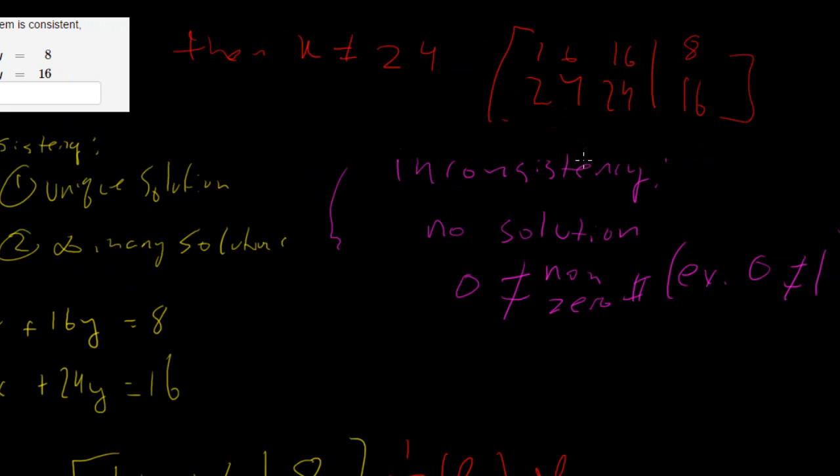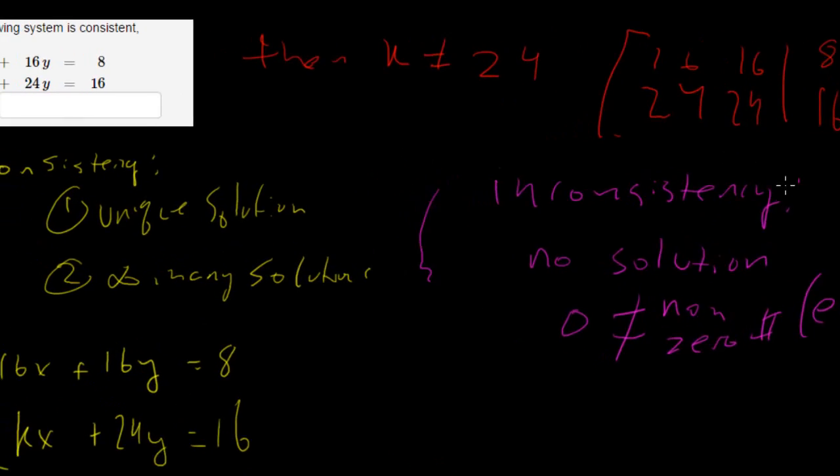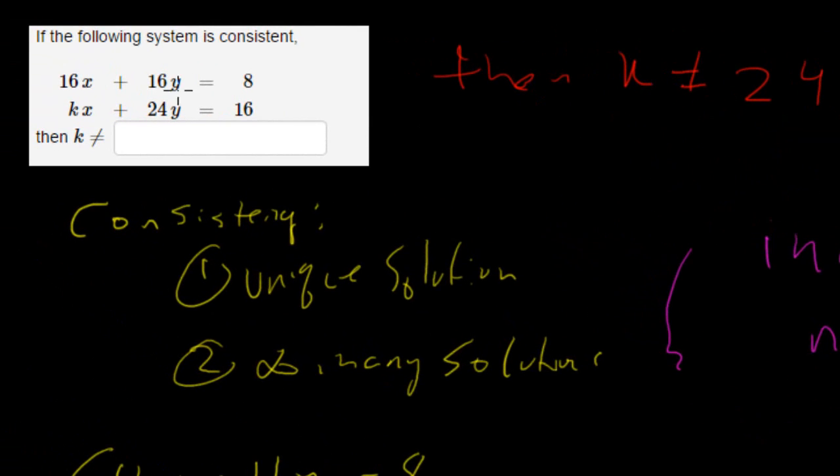It will give you something zero cannot equal to a number. So here you go, for this question your answer will be K cannot equal to 24.